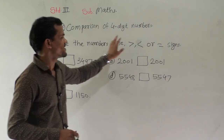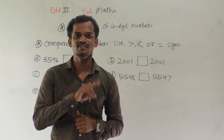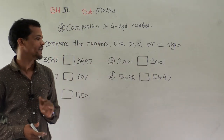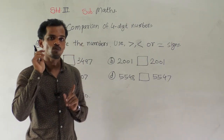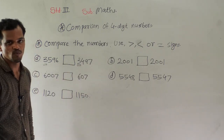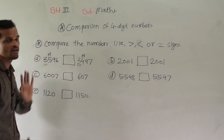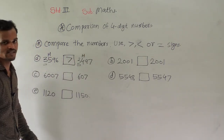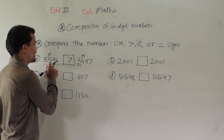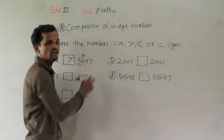We will solve some examples. Compare the numbers using greater than, smaller than, and equal to sign. If both numbers are the same, we use the equal to sign. The open side of the symbol should be at the greater number. Observe here: the thousands digits are the same, so compare the hundreds digit — 5 is greater than 4. So 3596 is greater than 3497.